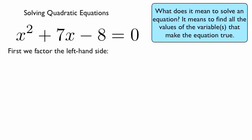And so the first step to this is just to factor the left-hand side. And that comes to x plus 8 times x minus 1 is equal to 0. And why do we do this?